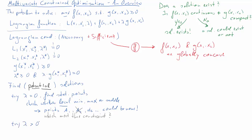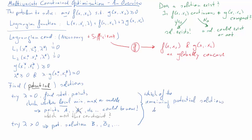Once we've addressed the lambda equals zero case, we turn to lambda greater than zero — the constrained maxima. From this process we find potential solutions B1, B2, etc. What we now need to establish is which of all remaining potential points — only maxima, and only those meeting the constraint — delivers the largest function value. We plug the coordinates for each point into f and find the largest function value.